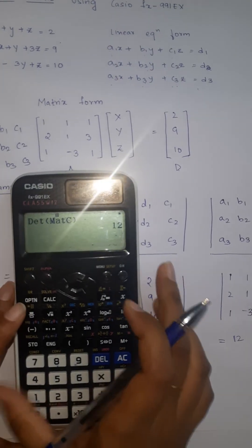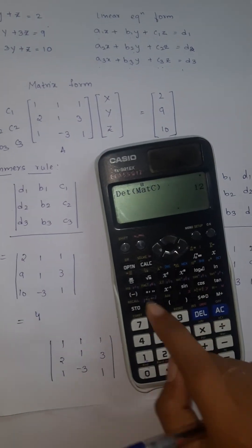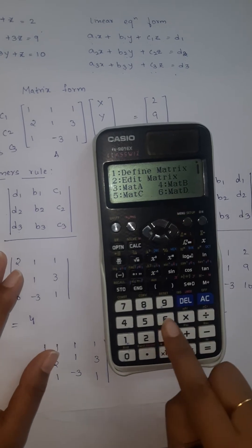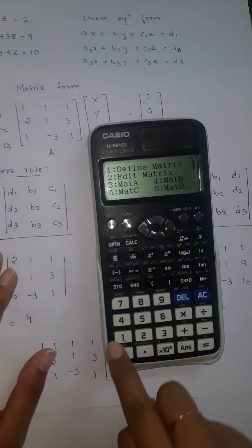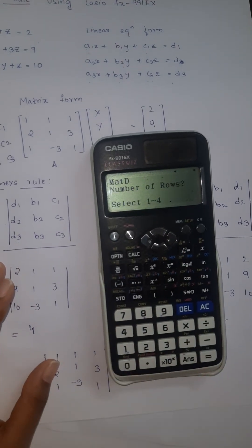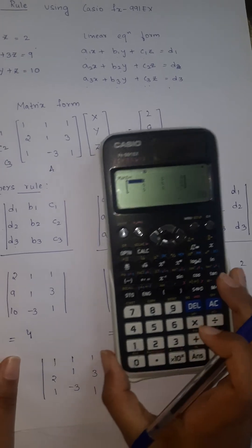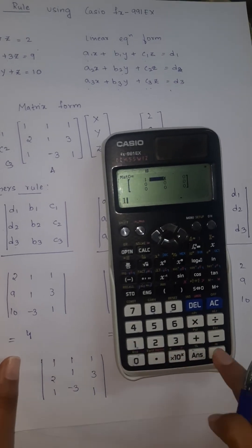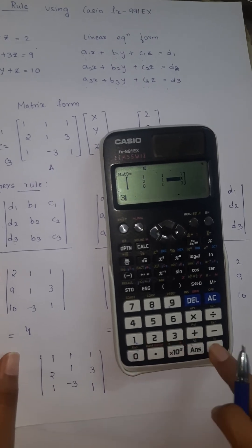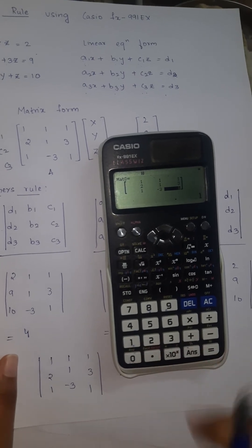Last and final matrix is this one. With this we will end our Cramer's method. Go to option, define matrix D. That is 4. Three rows, three columns. That is 1 equals 1 equals 1 equals 2 equals 1 equals 3, 1 minus 3 and 1.